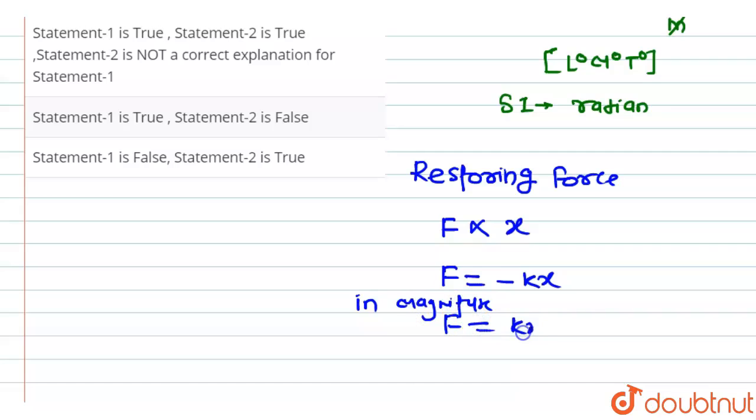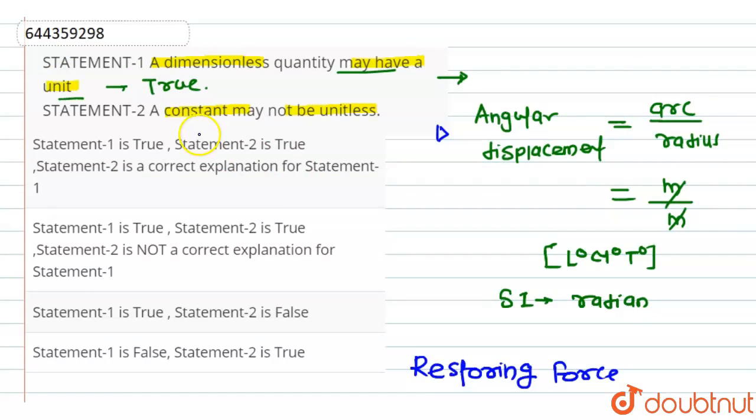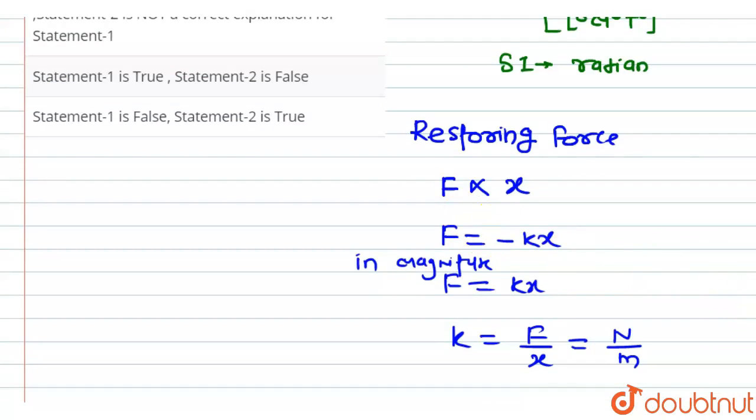F is equal to Kx, where K is restoring force constant, and here K is equal to F divided by X. So, the unit of K is Newton per meter. It means a constant may not be unitless or dimensionless.